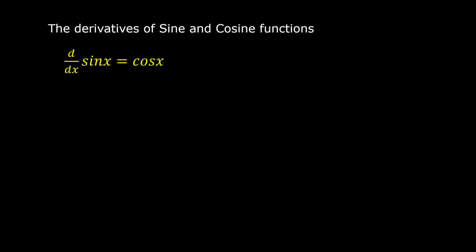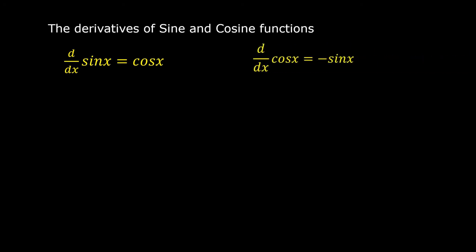The derivative of sine x with respect to x is equal to cosine x. And the derivative of cosine x with respect to x is equal to negative sine x.